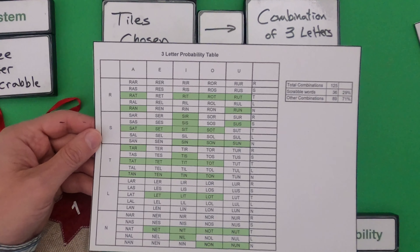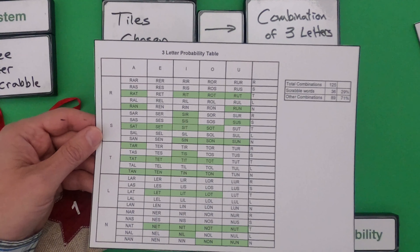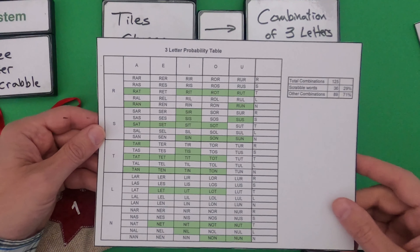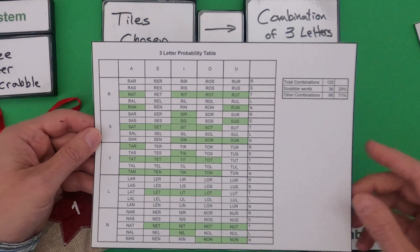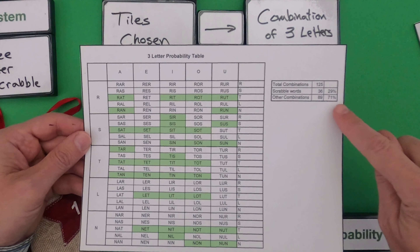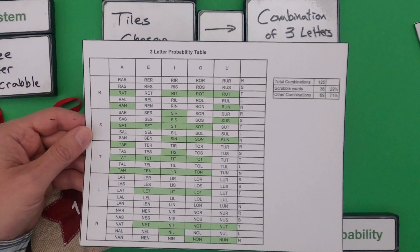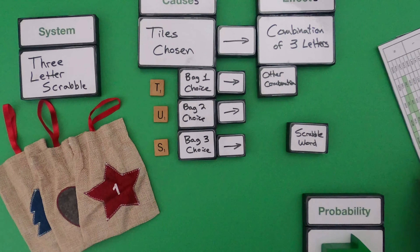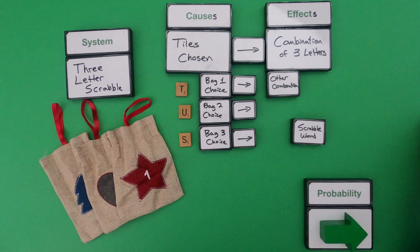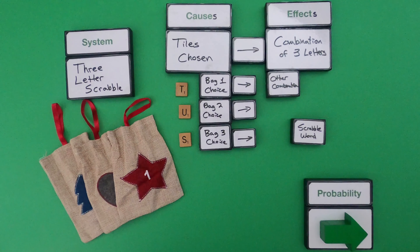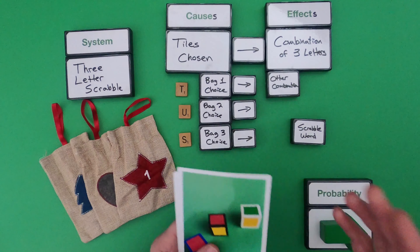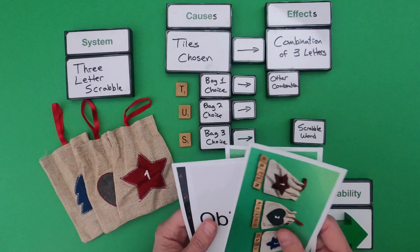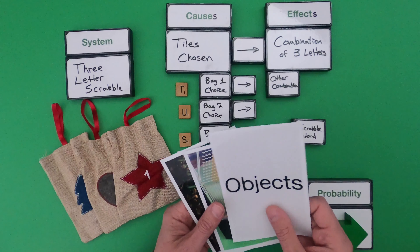Depending on what causes you get and when you get those causes, you're going to have different effects. When you're done watching this video, you should be able to understand objects like the multiple causes in a Galton board or the multiple factors that lead to growth in plants. But I'm going to start by showing you my thinking around cause and effects in a simple three dice game.